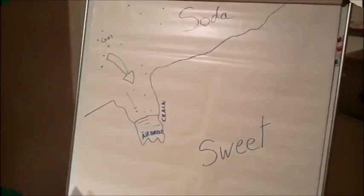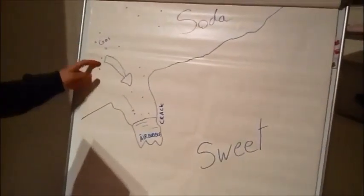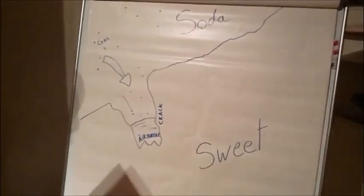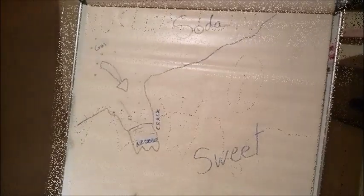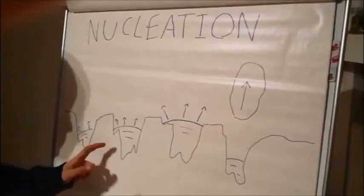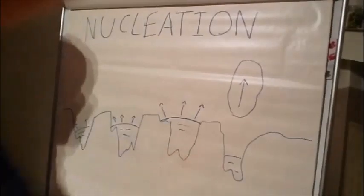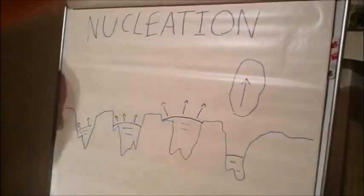The reason this happens is that there are tiny cracks on the surface of the sweet. In those cracks are micro air bubbles. The gas and the pressure in the soda rush towards the air bubbles. These bubbles grow and grow until they float to the surface, leaving another micro bubble behind.